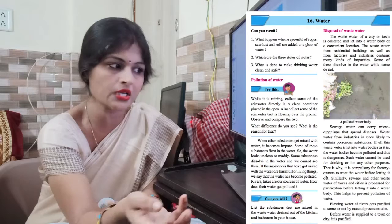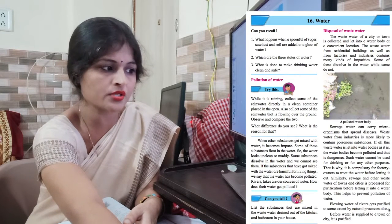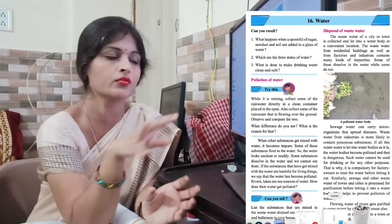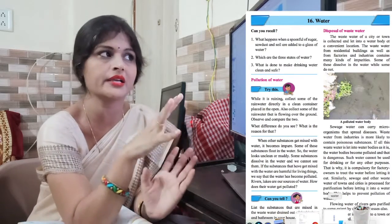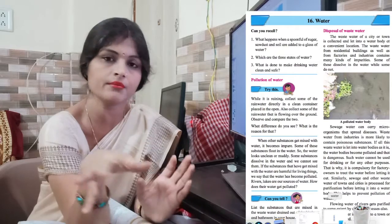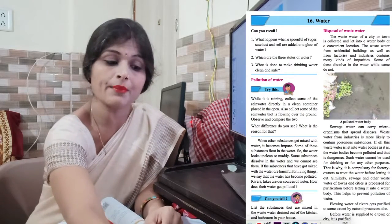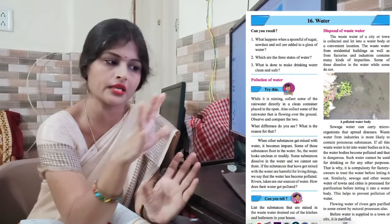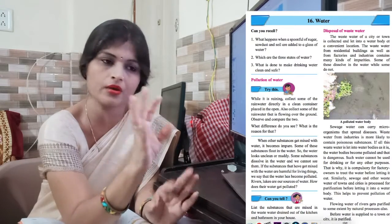Flowing water in rivers gets purified to some extent by natural processes. We should leave waste water in a separate place and not mix it with fresh water. As you can see in our homes, the water that comes is clean — no brown or black colour.